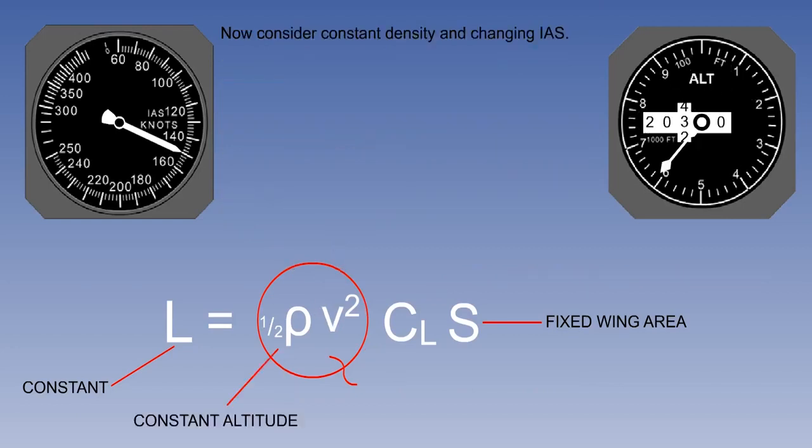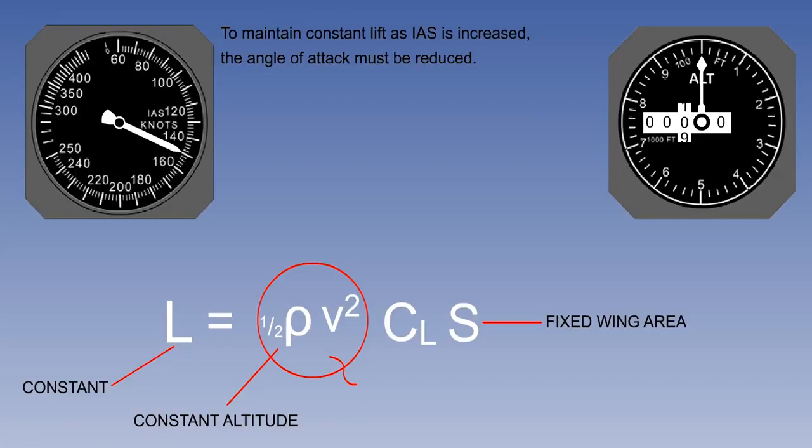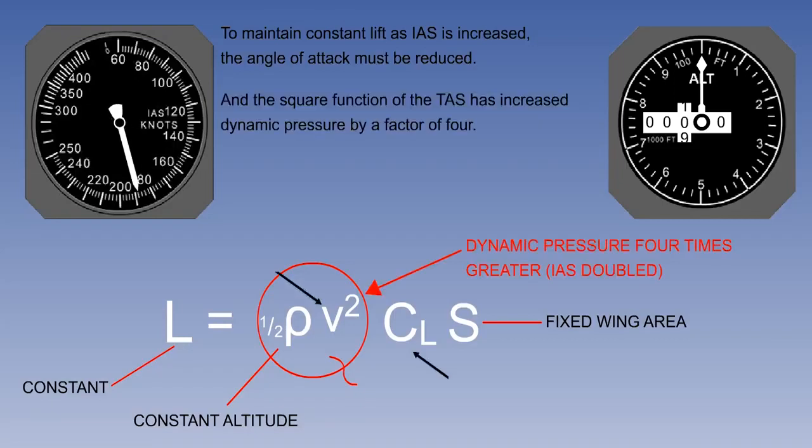The lift formula can also be used to look at the relationship between speed and angle of attack at a constant altitude. As before, if one element of the equation is increased, another must be reduced. As speed rises, the C_L must be reduced to maintain the same total lift, normally by reducing the angle of attack.